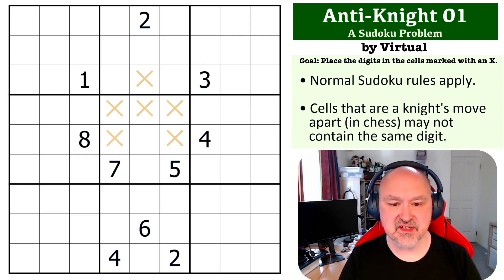So the way anti-knight works is it's very similar to normal Sudoku, so digits cannot repeat in rows, columns, and boxes, but digits also cannot repeat a knight's move away.